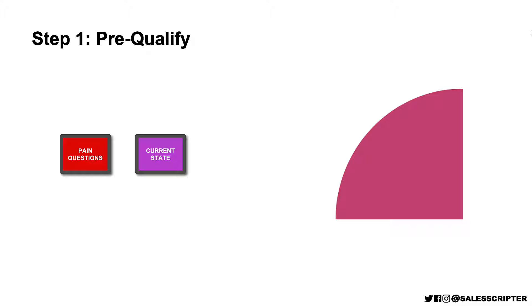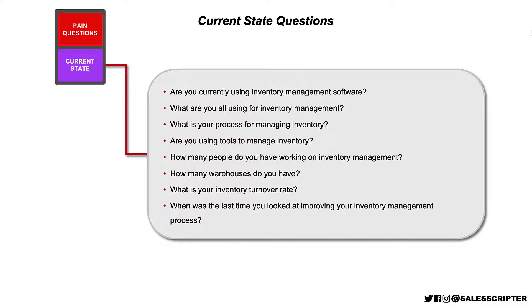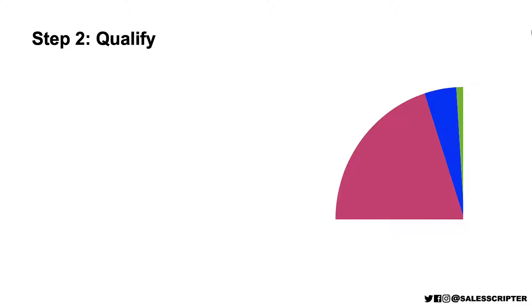Our goal is really just to figure out what's going on. Are you having challenges? What are you using today? These questions are very quick to identify that. As shown in the previous video, you can create pain questions and current state questions. Once you've pre-qualified and started talking more, it is then time for step two — to qualify the prospect and identify where they fit in that quadrant.